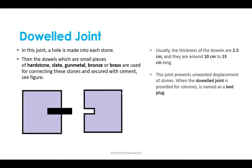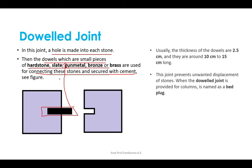The dowel joint involves making a hole in each stone. Dowels, which are small pieces of hard stone, slate, gunmetal, bronze, or brass, are used to connect the stones and secured with cement. The thickness of dowels is typically 2.5 cm and they are 10 to 15 cm long. This joint prevents unwanted displacement of stones. When a dowel joint is provided for columns, it is named a bed plug.